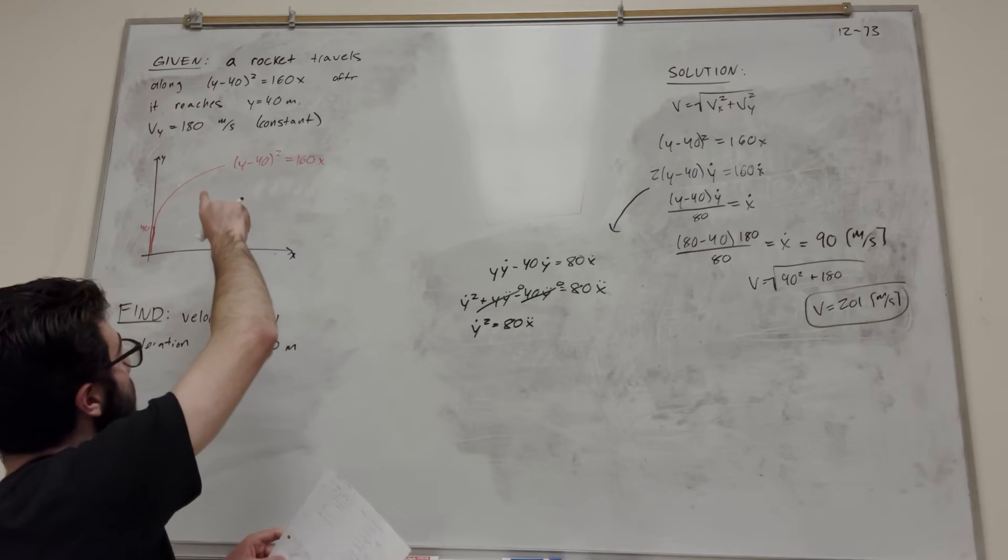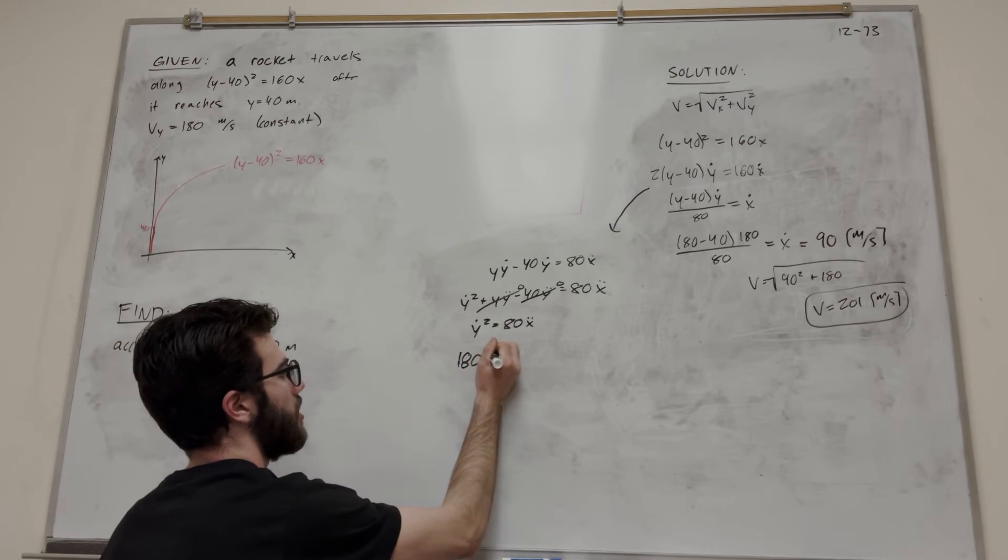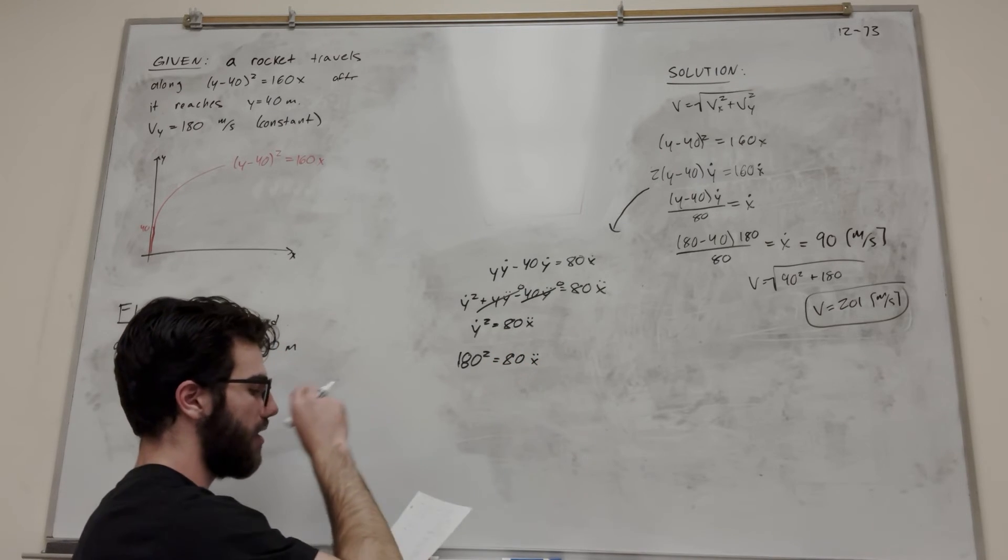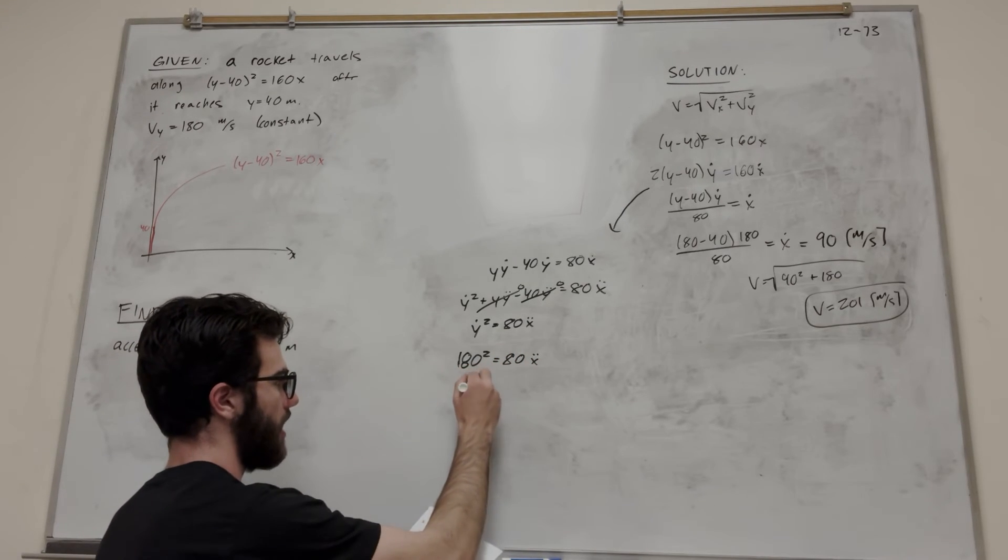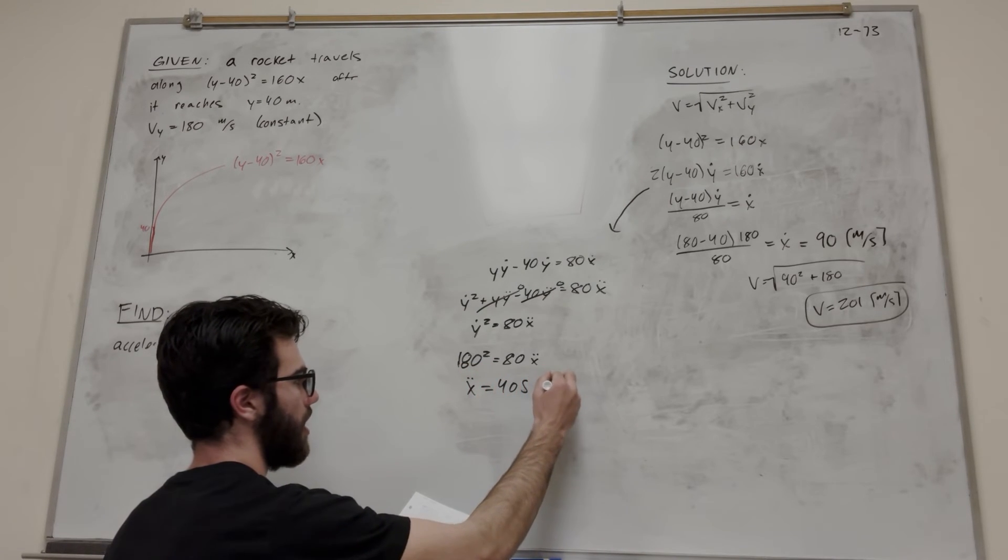Now we know what these numbers are. 180 squared is y dot equals 80 x double dot. You just divide by 80, and you get that x double dot equals 405 meters per second squared.